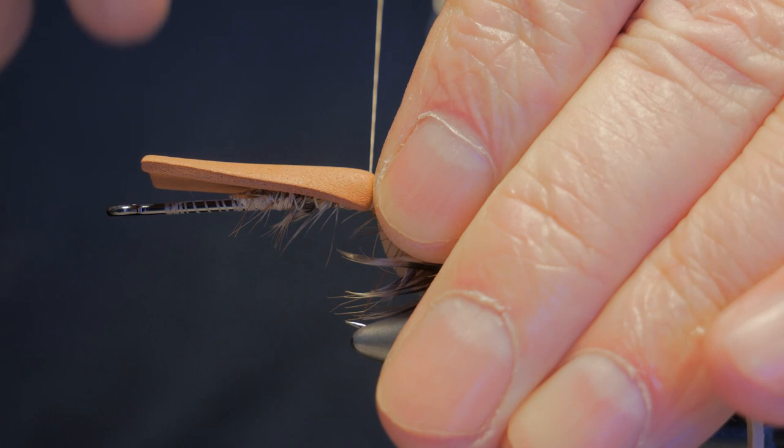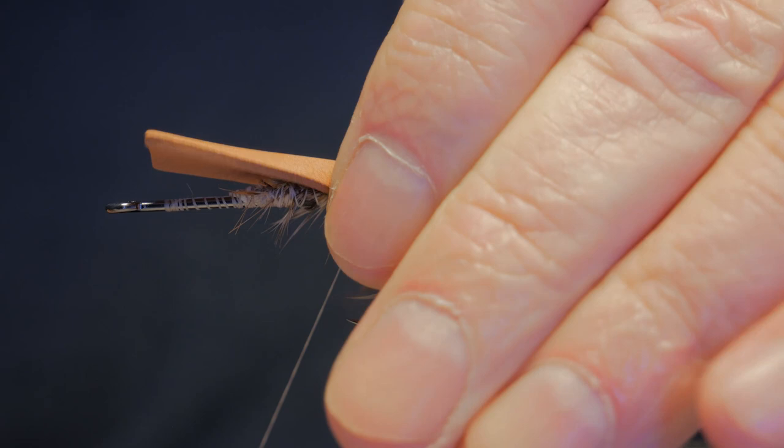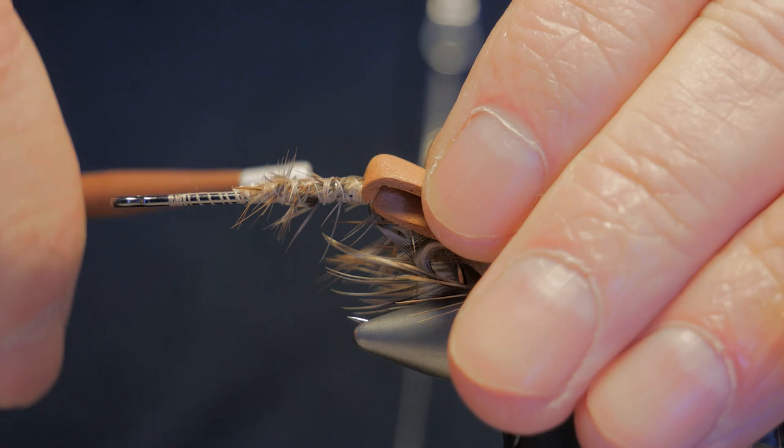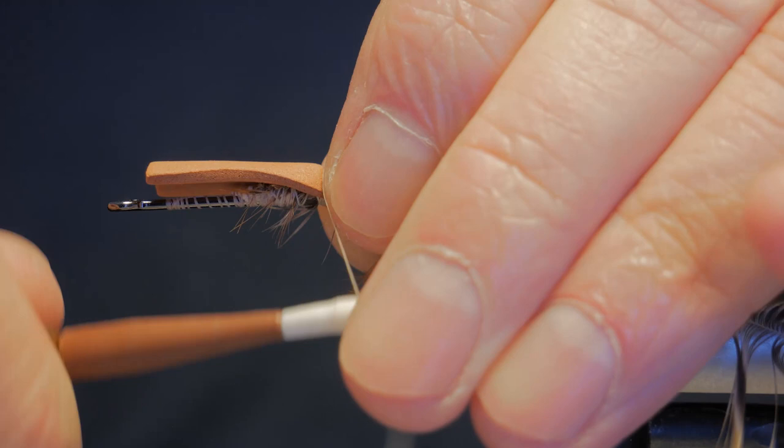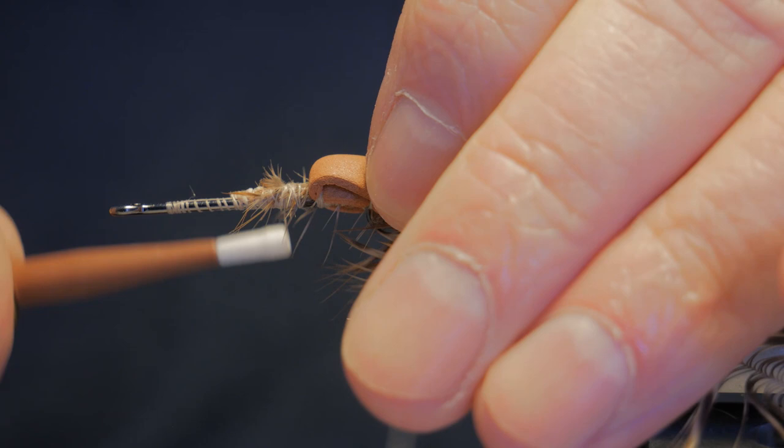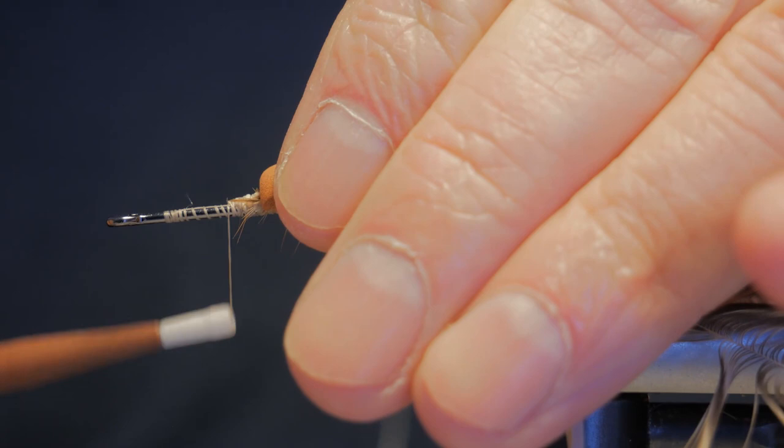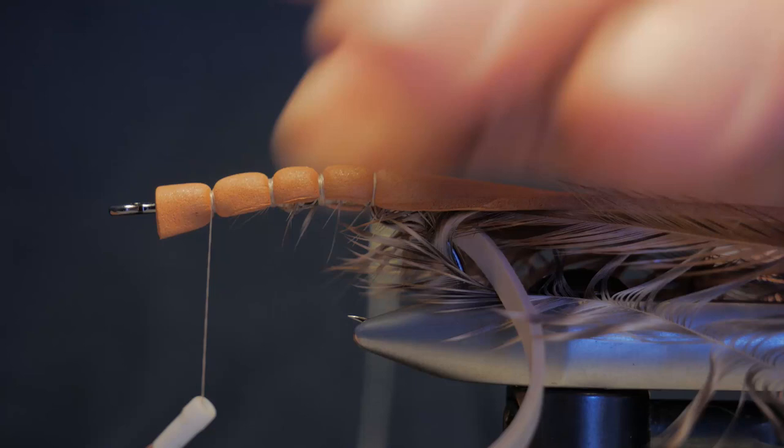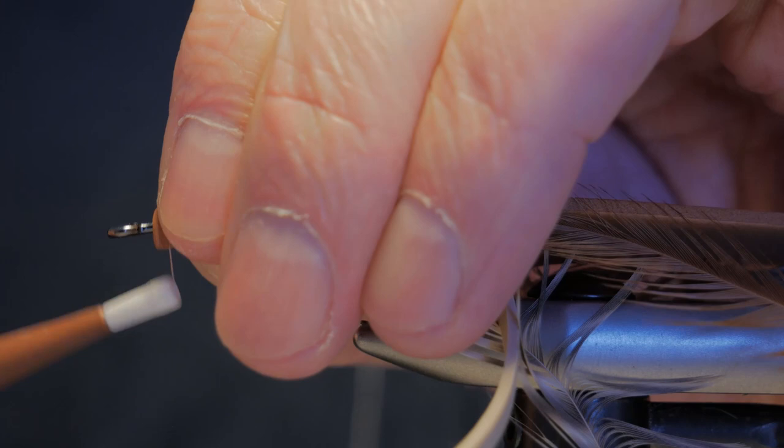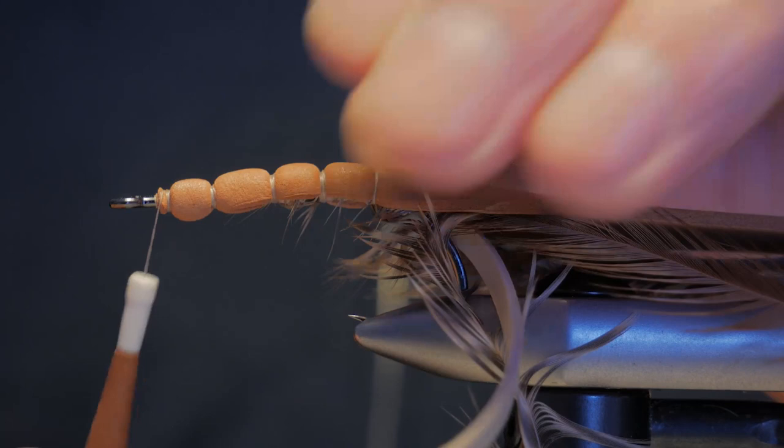You want to bind that down with a few wraps to the point where you almost break the thread. Fold the foam back a little bit, advance the thread maybe a half a centimeter, quarter of an inch. Do the same thing. Just keep doing that, repeating that process all the way to the front of the hook. Finally, bind down the very front of the foam nice and tight.